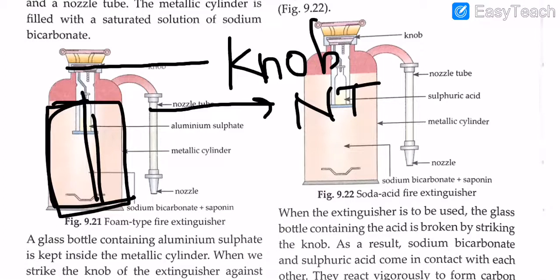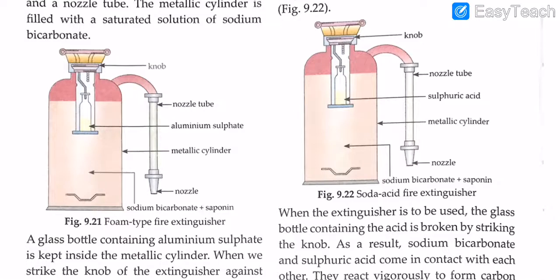The metallic cylinder contains sodium bicarbonate, NaHCO3. A glass bottle containing aluminium sulphate is kept inside the metallic cylinder. Notice the difference: the metallic cylinder is filled with the saturated sodium bicarbonate solution, but the aluminium sulphate is inside a separate glass bottle within the metallic cylinder. As you can see in the diagram, there is a little bottle of aluminium sulphate inside the metallic cylinder. When we strike the knob of the extinguisher against a hard surface, the glass bottle breaks.